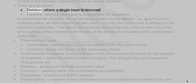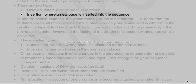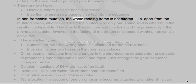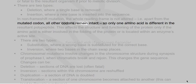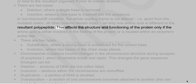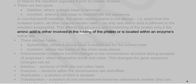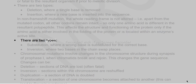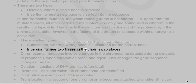There are two types of frameshift mutations: deletion, where a single base is removed, and insertion, where a new base is inserted into the sequence. In non-frameshift mutation, the whole reading frame is not altered — apart from the mutated codon, all other codons remain intact so only one amino acid is different in the resultant polypeptide. There are two types: substitution, where a wrong base is substituted for the correct base, and inversion, where two bases in the chain swap places.